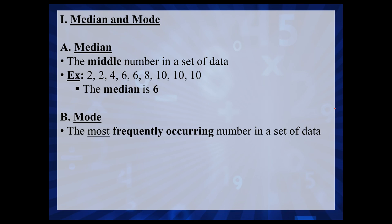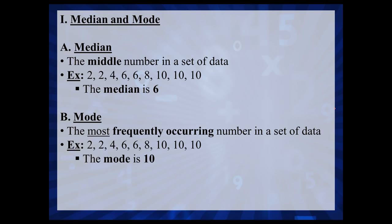The mode is the most frequently occurring number in a data set. Going back to the example — the number of goals scored by a hockey team — the mode would be the most frequently occurring number of goals scored in a game. Looking at the data set, the number 10 occurs three times, which is more than any other number. Two occurs twice, four occurs once, six occurs twice, eight occurs once, 10 occurs three times. Therefore, the mode of the data set is 10.